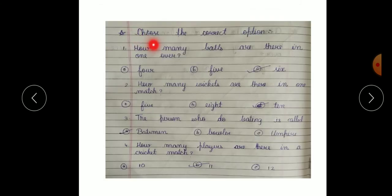Now next, choose the correct option. How many balls are there in one over? How many wickets are there in one match? Five, eight, ten. So kitne players kill tay hai? Ten. Ten wickets out ho jae to match over ho jaetha hai. The person who is batting is called jho bat karta hai, usko kya bolenghe? Batsman, bowler ya umpire? Batsman.